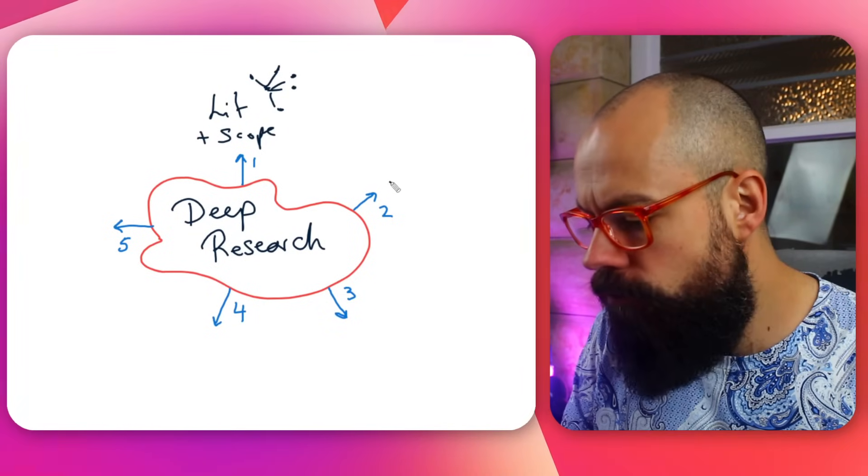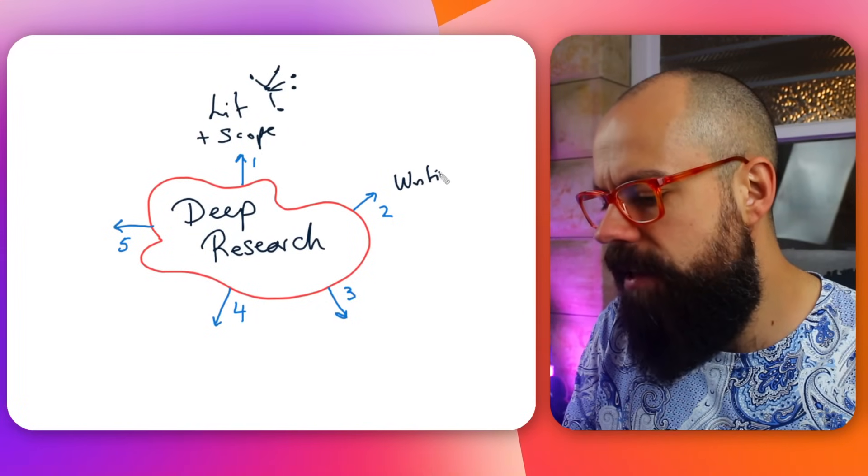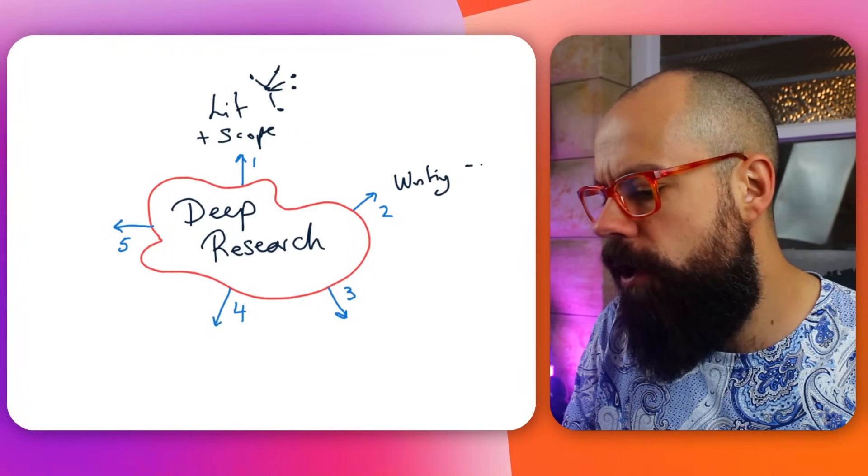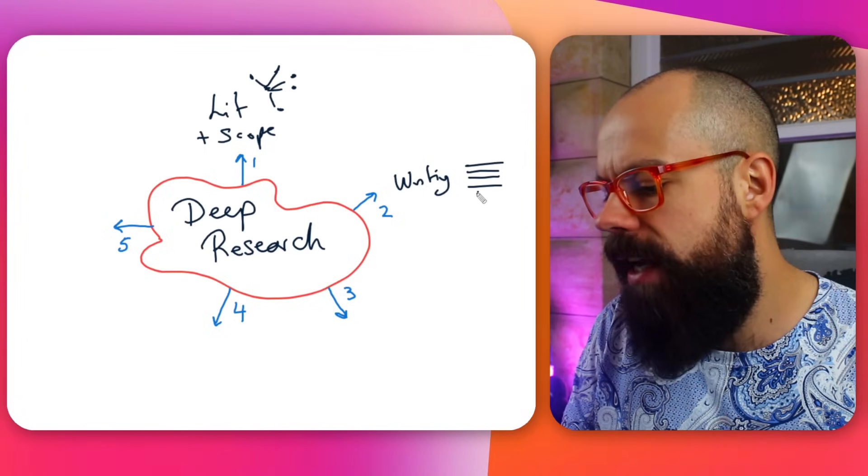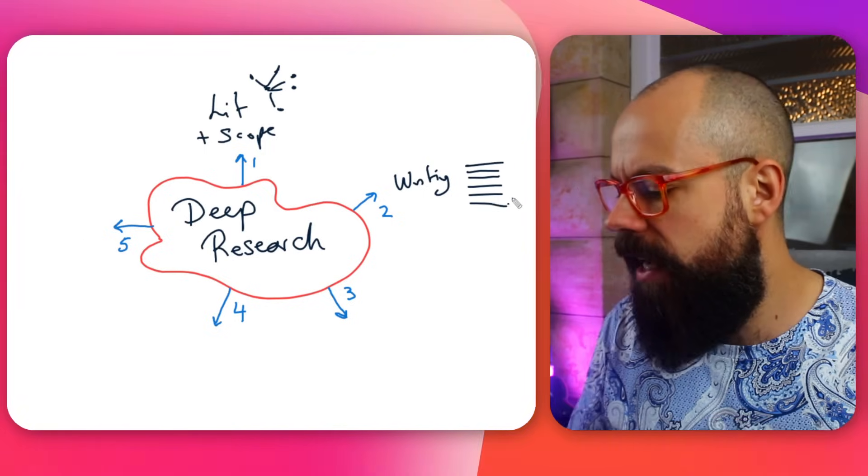The second way you can use deep research tools is for writing. This is the most controversial part of using any large language model, but really we're using it to support our writing, to justify what we've written, and to find references — instead of going off to find references manually, this can do it for you now.